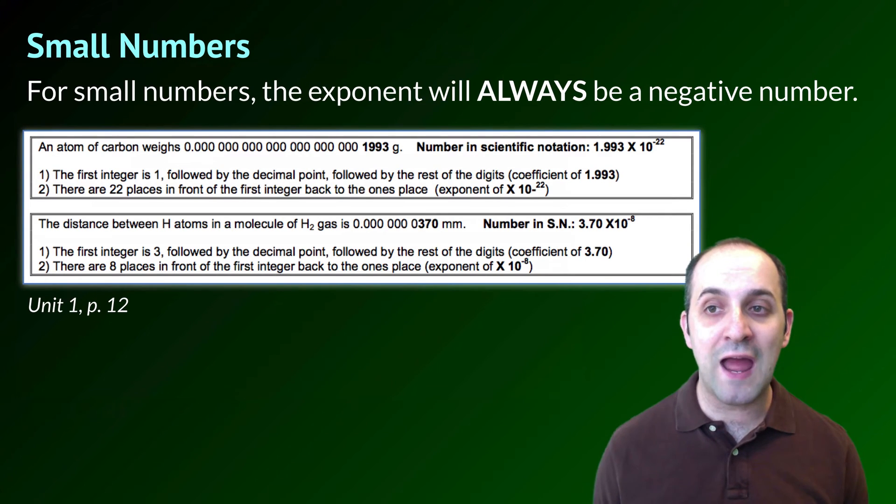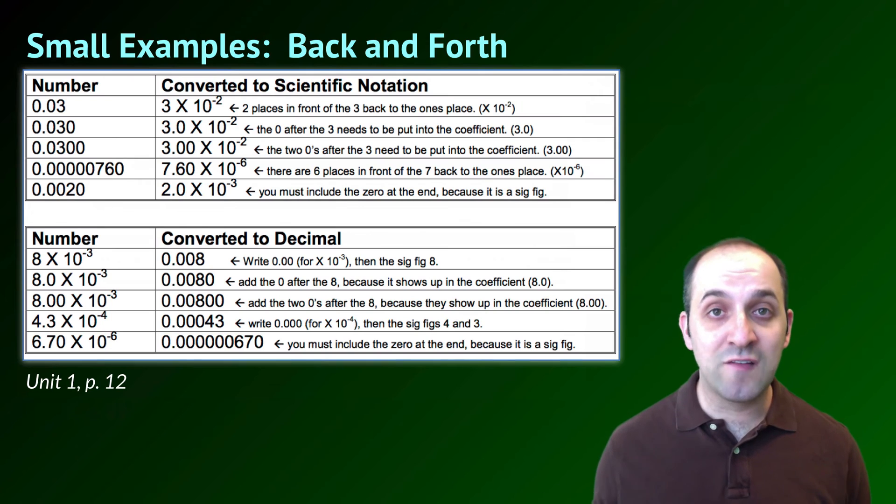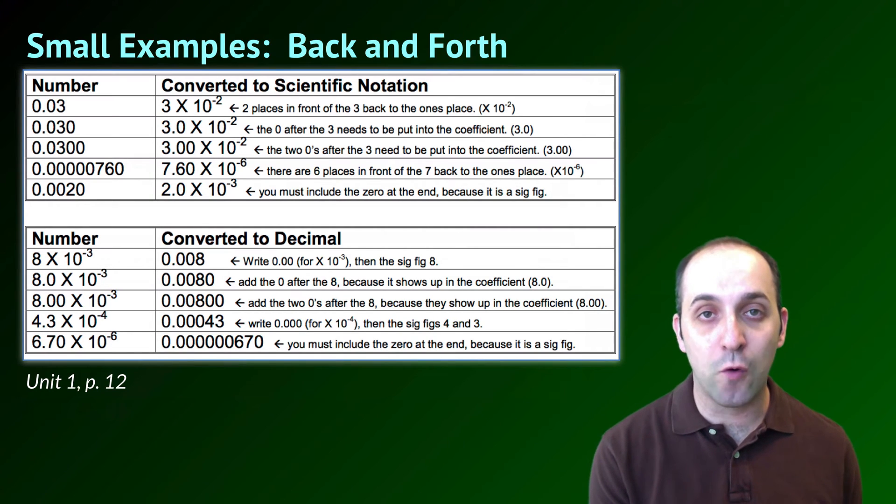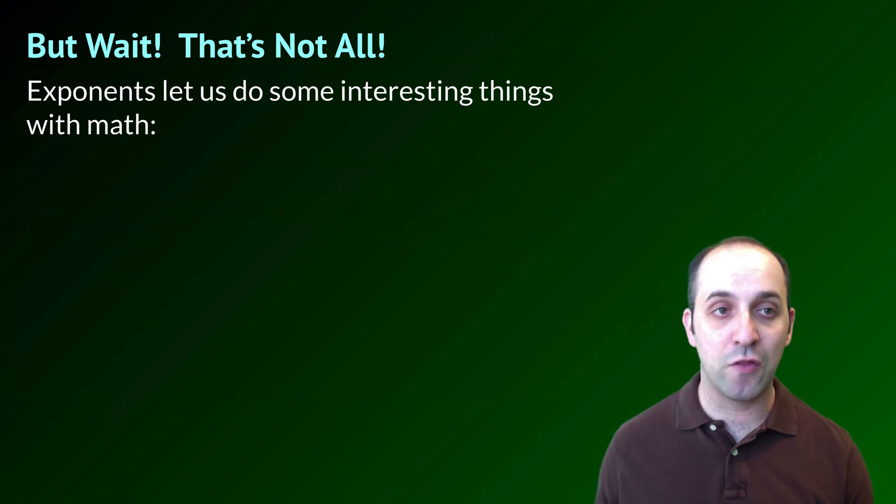Small numbers are always going to have a negative number as their exponent. That negative exponent is necessary because that small number is less than 1 and 10 to the 0 is 1. So our exponent is going to have to be less than 0 in order to make our number smaller than 1. Here are a couple examples from page 12 in our unit packet. Here are some examples from page 12 of going back and forth between the regular notation for the number and the number in scientific notation. If you've talked about scientific notation before now, that's probably where you've left it. We're actually going to go in and look at a couple of other things.